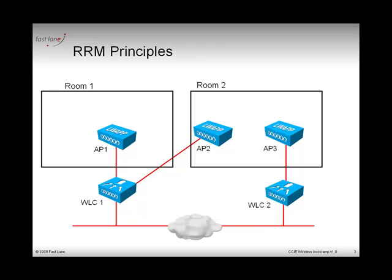These messages contain information about the access point and the controller to which it is connected. All other access points will receive this message and forward it to their controller. The message starts from WLC1, goes to AP1, leaves the network on AP1's radio, and may be captured by AP2, AP3, or other access points, which then send it back to their relevant controller.